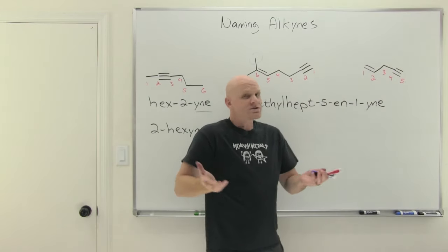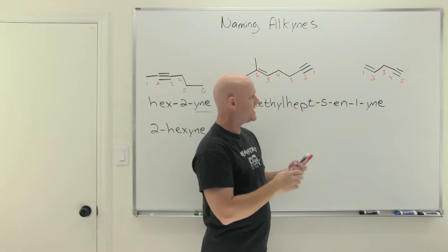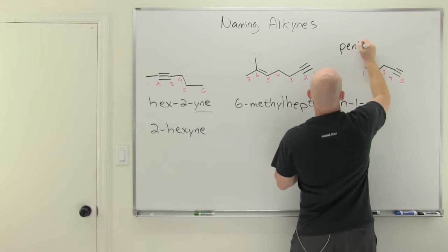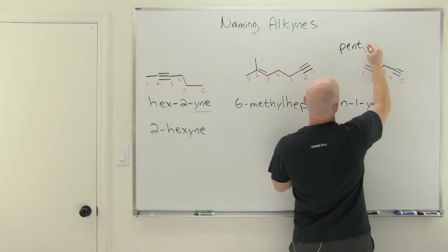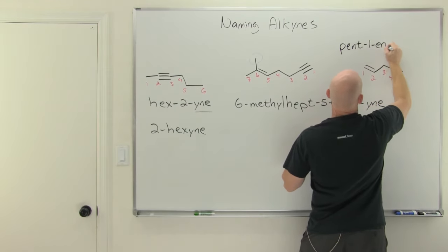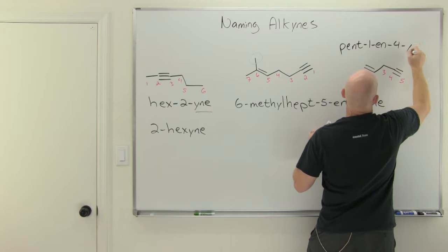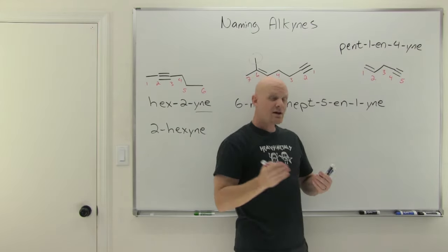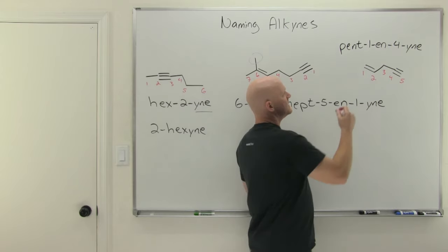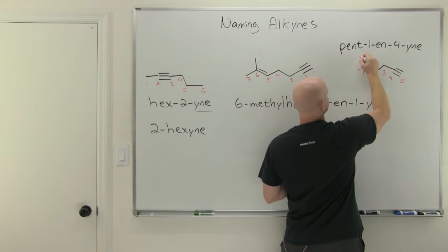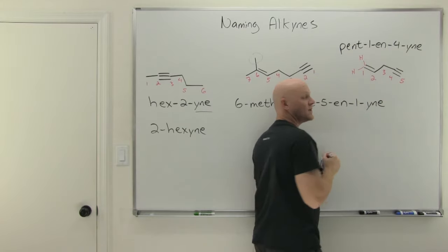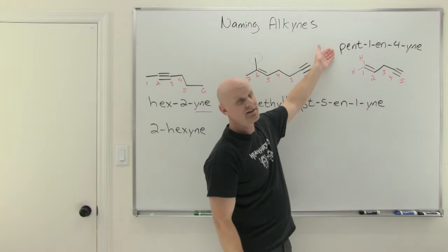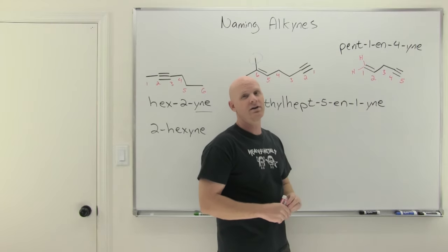In this case, there are no substituents. Everything is part of the parent chain, which is five carbons, so we start with pent. Ene comes first, so pent-1-en-4-yne. When naming an alkene, always check for E and Z. In this case, the left sp2 carbon of the alkene is bonded to identical hydrogens, so there's no E and Z to worry about. The complete name is pent-1-en-4-yne.